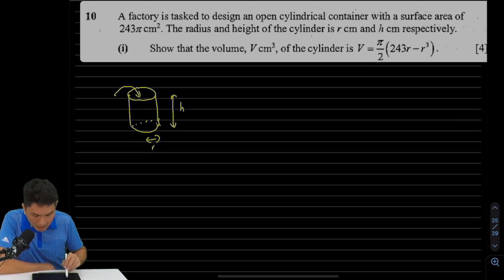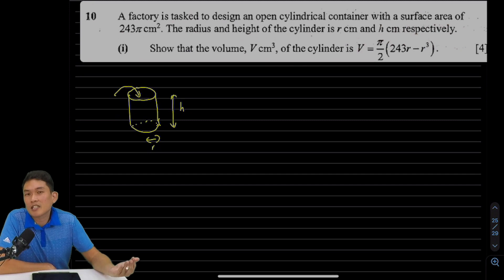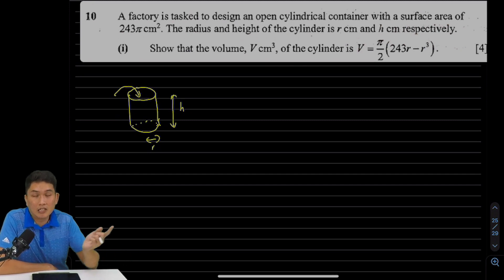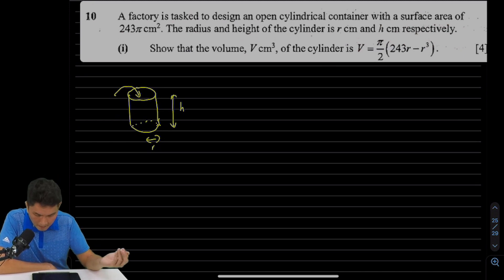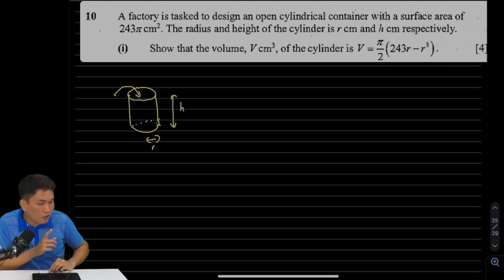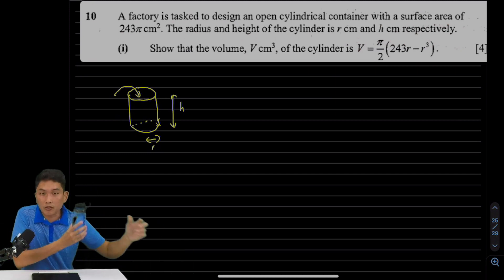Now the radius and height of the cylinder is r and h respectively. Show that the volume is equals to this thing over here. Now first, let's look at the surface area of a cylinder. The net of solid of an open cylinder—what is that? So the curved surface area, in case you have forgotten, right, here I have my water bottle.